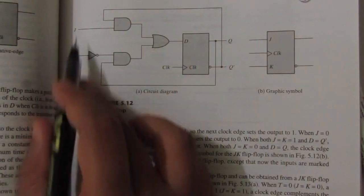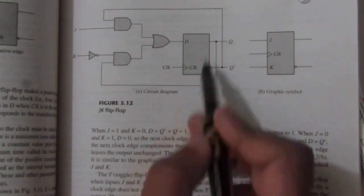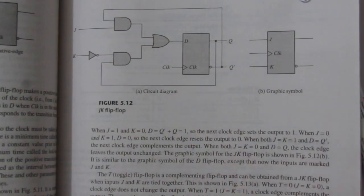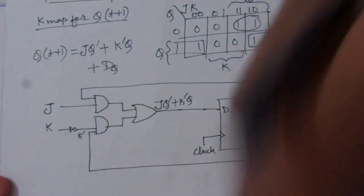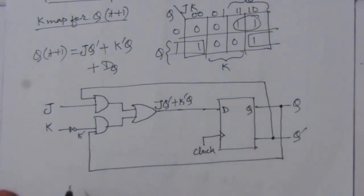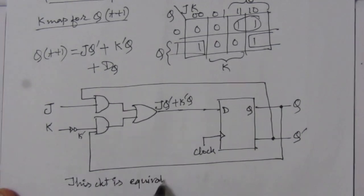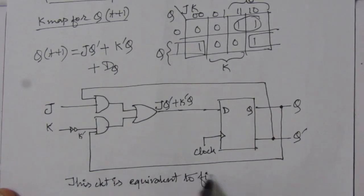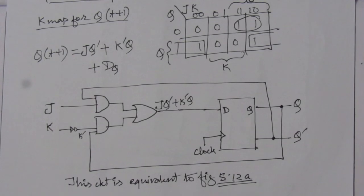Comparing this circuit with figure 5.12, we can see it is the same circuit — it has J, K, AND gates, an OR gate, and a D flip-flop connected in the same way. So we can confirm that this circuit is equivalent to figure 5.12. Thank you for watching; if you have any questions please put them in the comment section below, and also like, share, and subscribe to my channel.